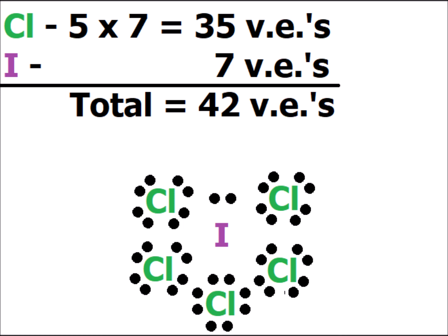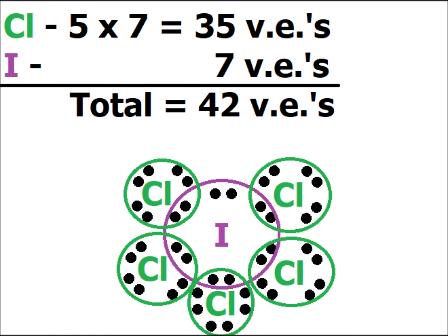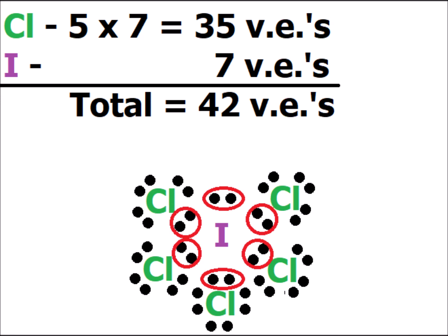ICl5, iodine pentachloride, has 42 valence electrons. Chlorine and iodine, both being halogens, each have 7 valence electrons, with iodine being the larger atom and our central atom. We satisfy the octet rule for each chlorine atom, and we expand the octet for iodine — it has a total of 12 electrons — which is valid because iodine is in the third row or beyond of the periodic table. The central iodine atom is surrounded by six electron pairs: five are bonding pairs to chlorine and one is a lone pair, giving six electron domains.